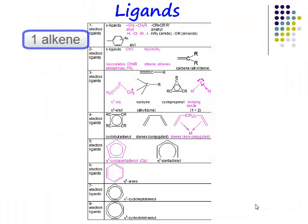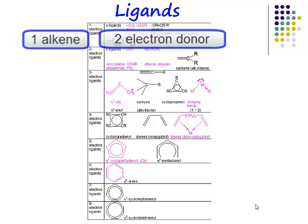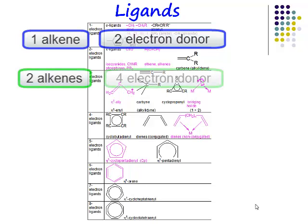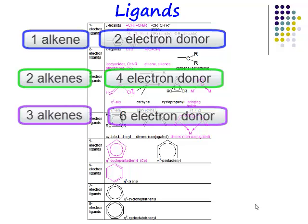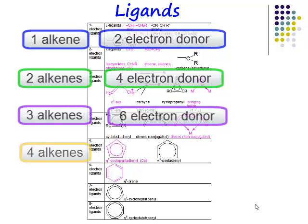If you've got one alkene, it's a two-electron donor. If you've got two alkenes, it's a four-electron donor. If you've got three alkenes, it's a six-electron donor. And if you've got four alkenes, that's an eight-electron donor.